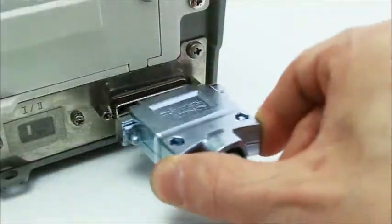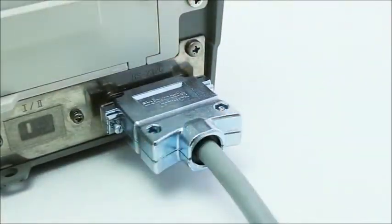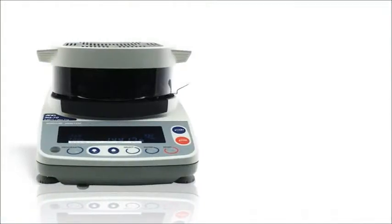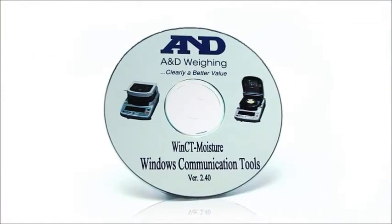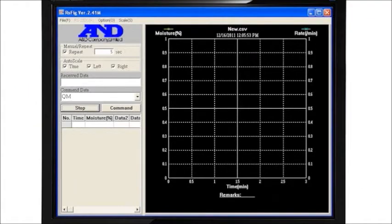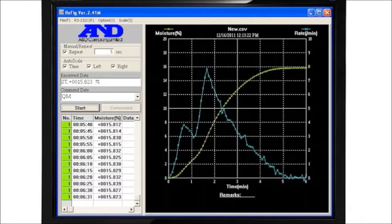Computer control and data export are easy with built-in RS-232. With the MS-70 and MX-50, you also get A&D's WinCT Moisture Software, which displays both moisture and moisture rate changes over time.